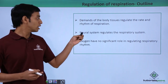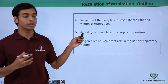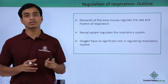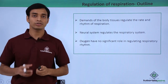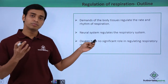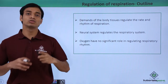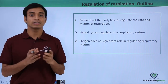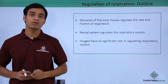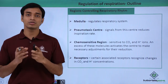This regulation is actually controlled wholly by the neural system of our body. The neural system controls all these regulations of the respiratory system. Oxygen does not play a significant role in the regulation of the respiratory system. Now let us take a look at the various respiratory centers which actually control or moderate the respiration rate.